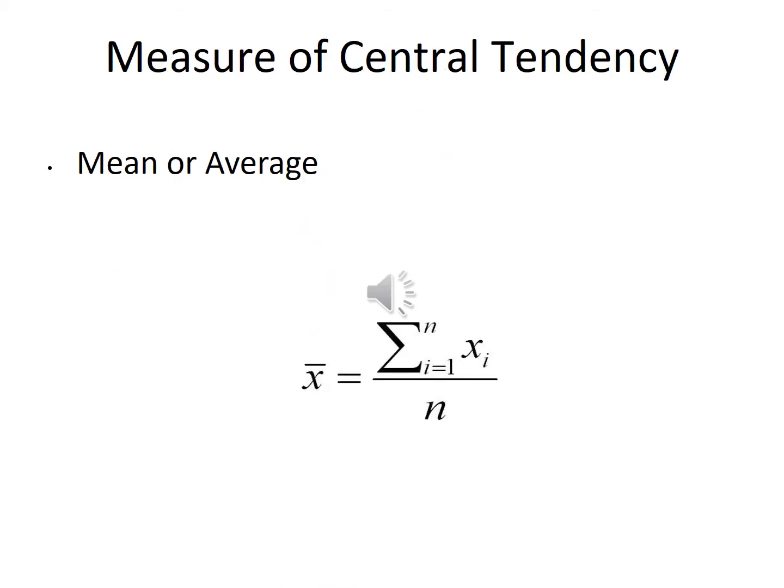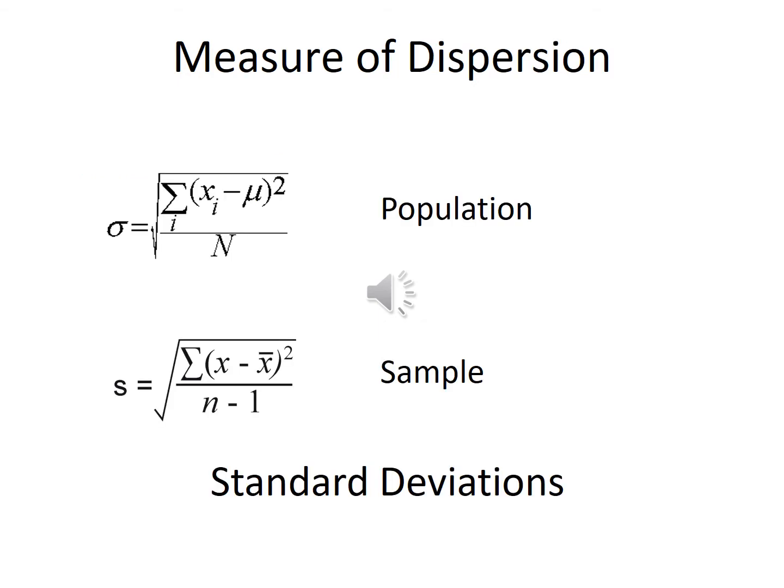If you haven't seen this before, this is the formula for average using summation notation — this came about because of computers. At the top you see capital Sigma with n and i equals 1. What you do is sum up all the individual components in the sample, then divide by the sample size n, and that gives you the average.